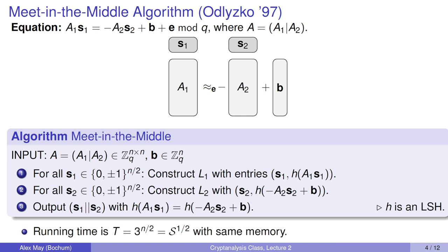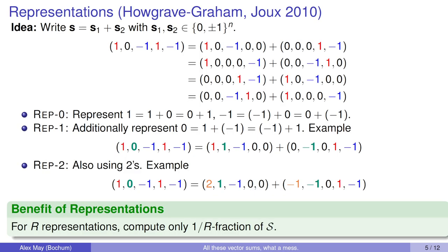I will give you a brief introduction into the representation technique, which is the key for the further improvements on ternary LWE. What is the main idea of the representation technique, which was introduced by Howgrave-Graham and Joux in the context of subset sum algorithms? It's that we split S not in n/2 dimensional vectors S1 and S2, but we split S as a sum of S1 and S2, both being full n-dimensional ternary vectors.